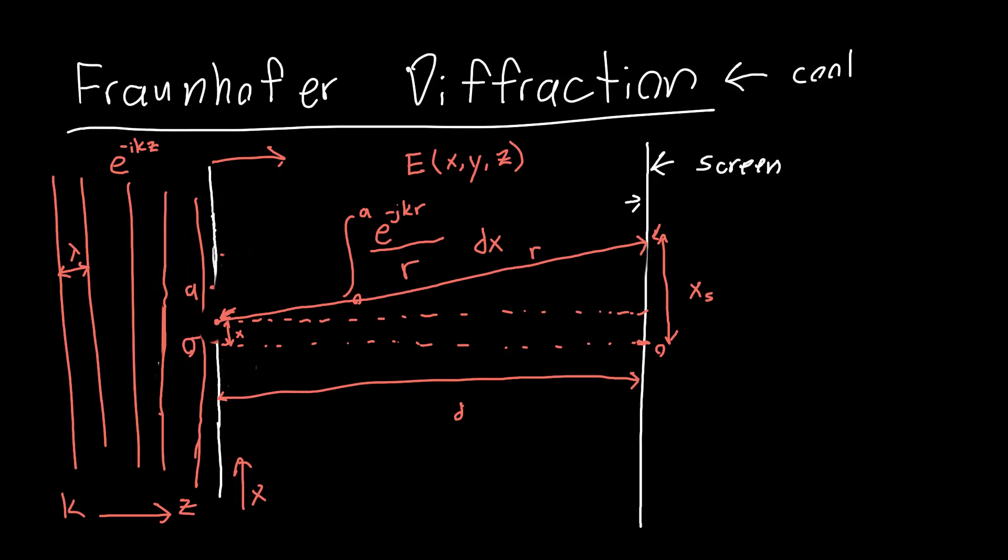So what is this distance r? Well, we just have a right triangle right here. And so it's this distance. So this is x_s minus x. So it's this distance squared plus this distance d squared. So r is just the square root, this is just Pythagorean's theorem, x_s minus x squared plus d squared. So x is the variable that we're interested in, everything else is going to be treated as a constant for the integration.